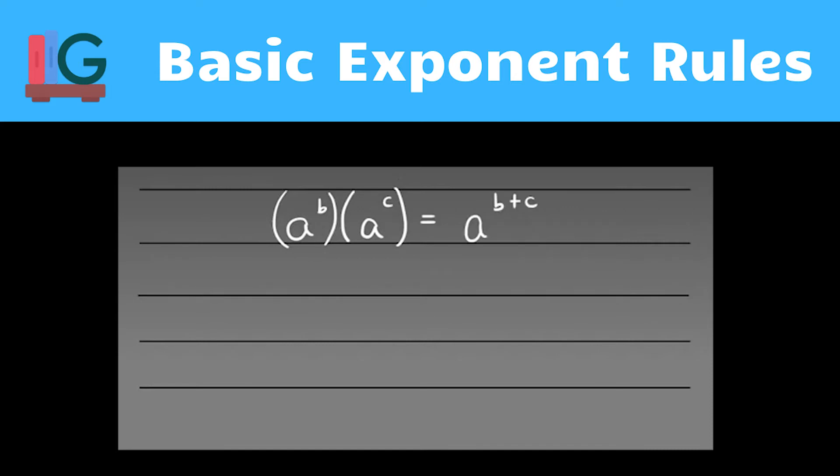This is as long as you have the same base. So if you have, for instance, 2 to the b times 2 to the c, that would be 2 to the b plus c. One way to remember these rules a little better is by knowing that each rule has an opposite.